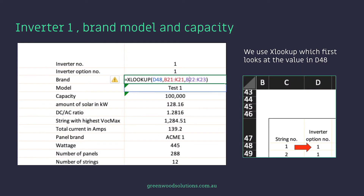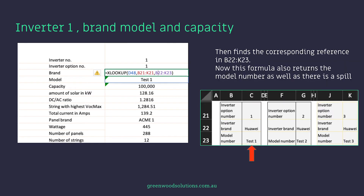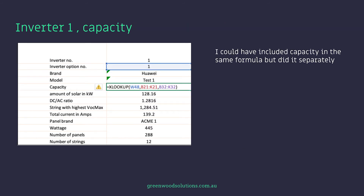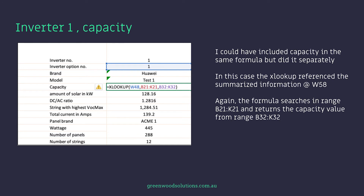If you're using an older version of Excel or another spreadsheet program that doesn't have XLOOKUP, you can use VLOOKUP — you just have to be a bit more careful. The XLOOKUP first looks at the value in D48, then searches for this info in the range B21 to K21, then finds the corresponding reference in B22 to K23. This formula also returns a model number as there is a spill. Capacity is done separately, where XLOOKUP references summarized information at W58, searching in range B21 to K21 and returning the capacity value from range B32 to K32.